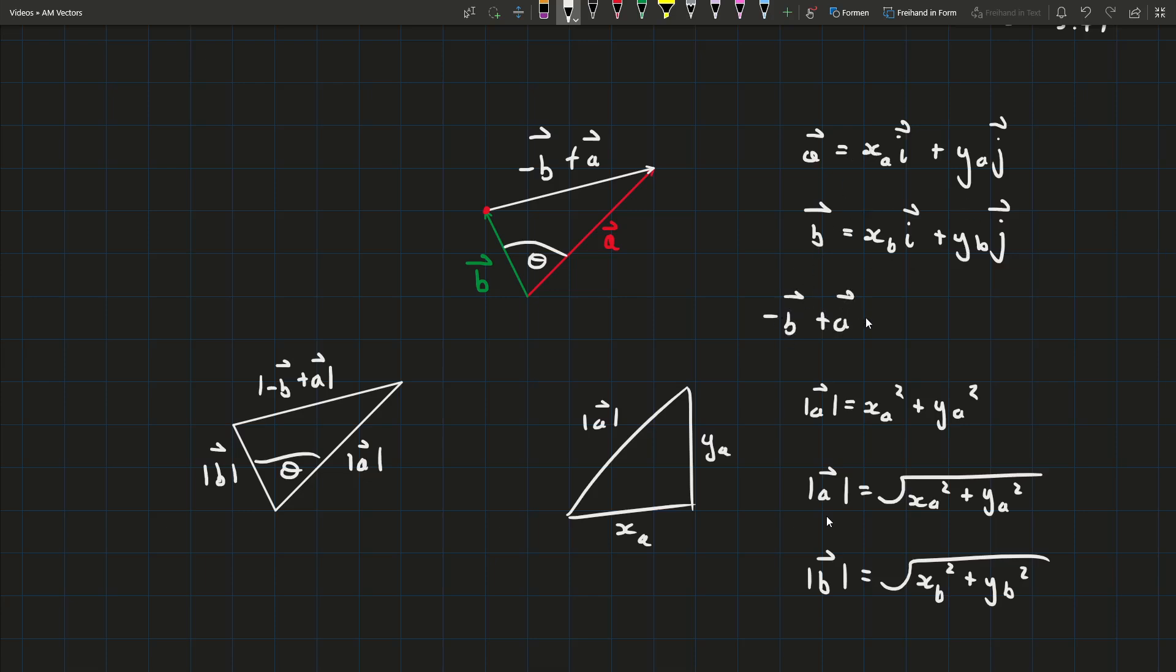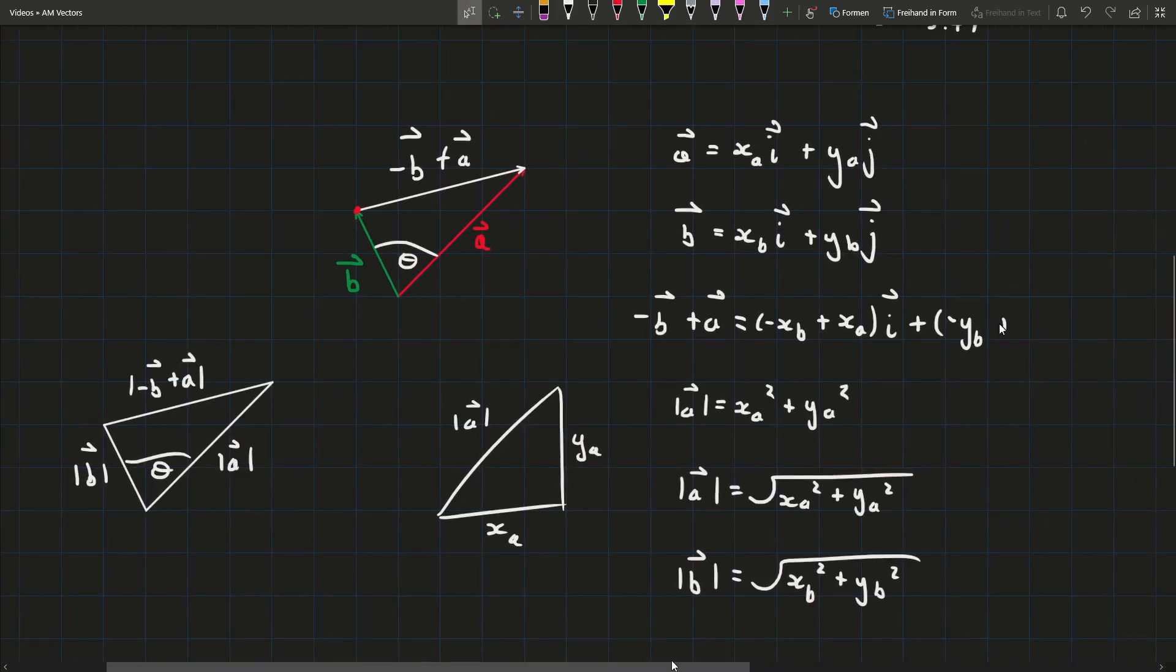So minus vector b plus vector a, remember when you're adding vectors you do the i components and the j components separately since they don't interfere with each other. So minus vector b that's going to be minus xb and we have plus vector a which is xa in the i direction. And we'll have plus and then for vector b we make it a minus we'll have minus yb and then we'll have plus whatever vector a is which is ya and that's in the j direction.